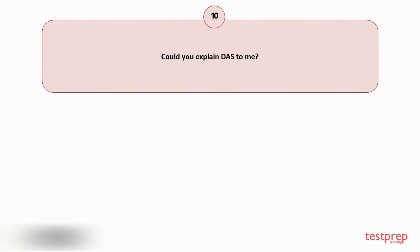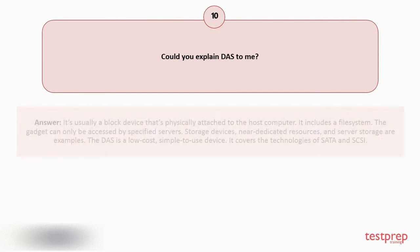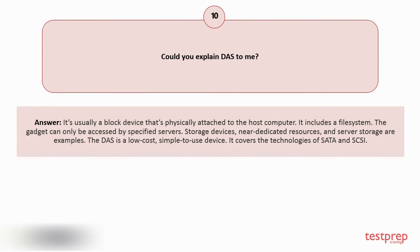Question number 10: Could you explain DAS? It's usually a block device that's physically attached to the host computer and includes a file system. The device can only be accessed by specified servers. Storage devices, near dedicated resources, and server storage are examples. The DAS is a low cost, simple to use device. It covers the technologies of SATA and SCSI.